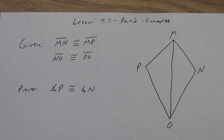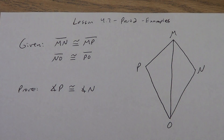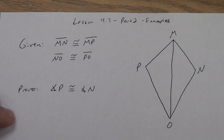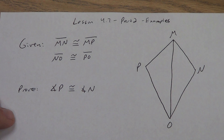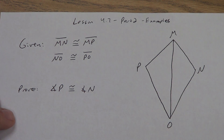This is the second video for Lesson 4.2. We're going to do some examples of using CPCTC. Remember, CPCTC stands for Corresponding Parts of Congruent Triangles are Congruent, and you're only allowed to use it after you have congruent triangles.